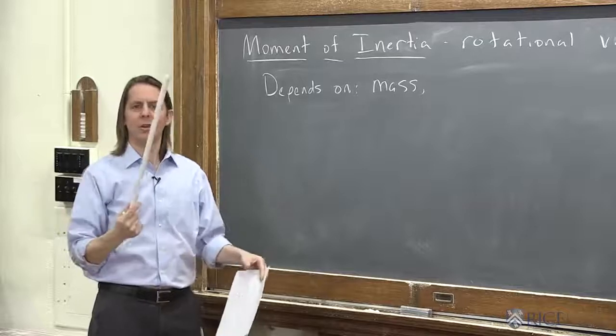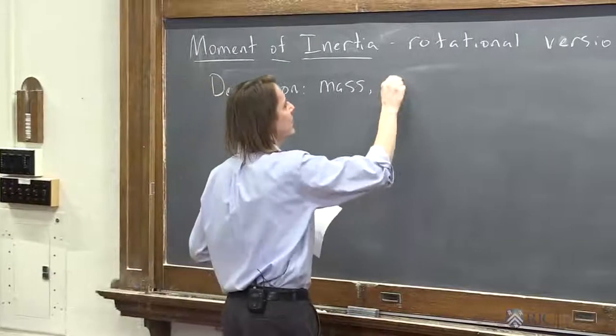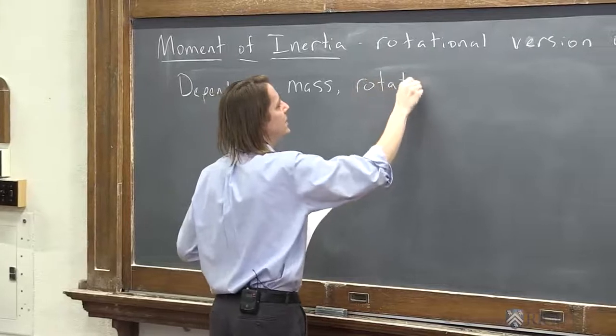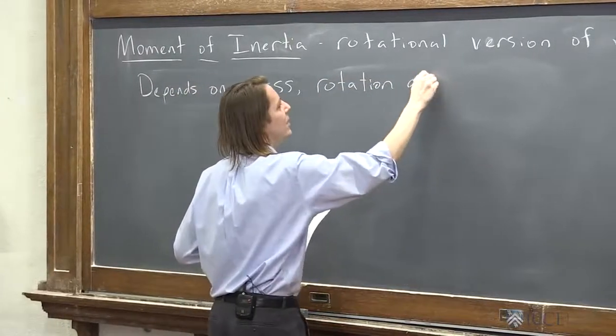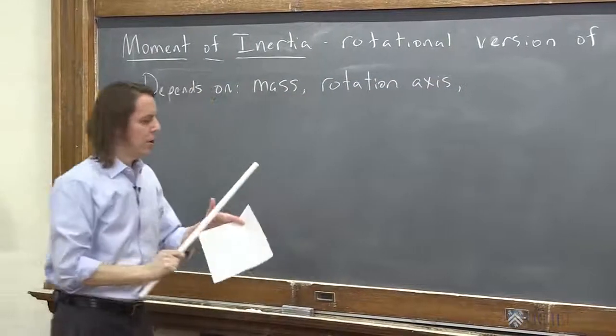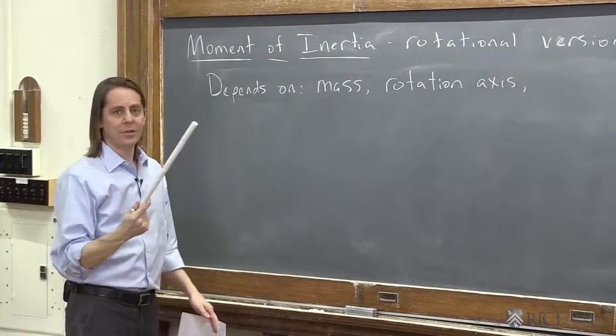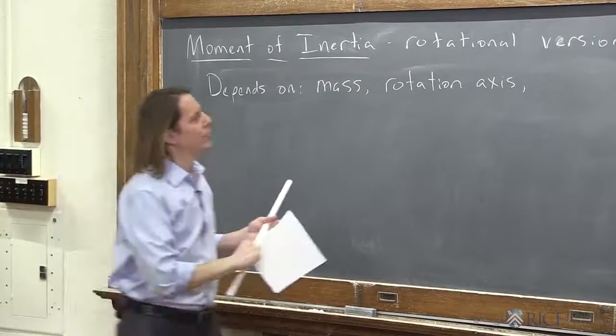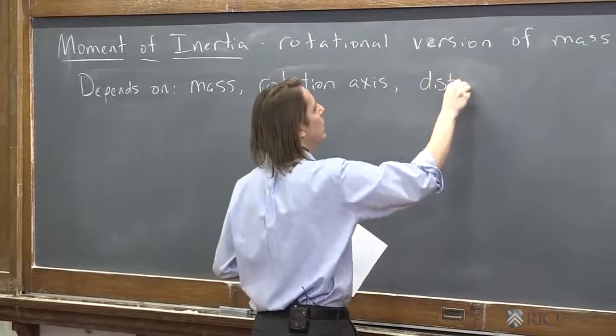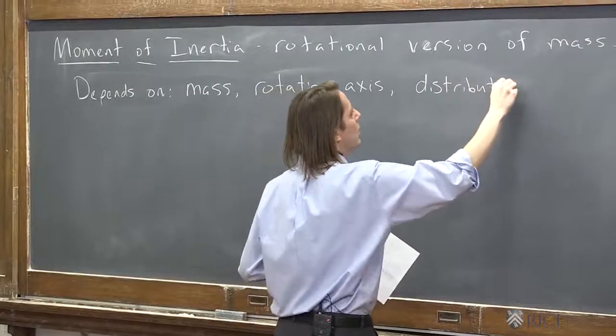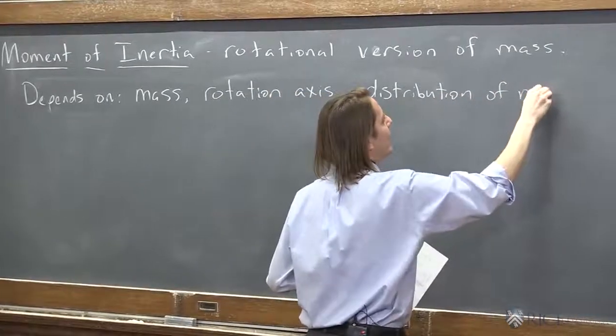An object does not have a constant moment of inertia for all problems. It depends on the axis that you're rotating it around. And it also depends on the distribution of mass around that axis.